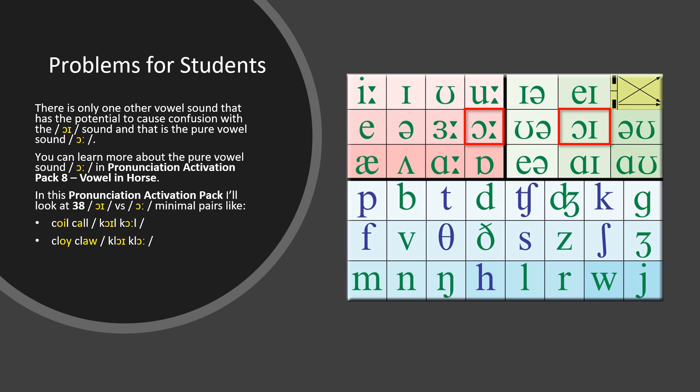Examples of OI vs. OR minimal pairs include: COIL vs. CALL, and CLOY vs. CLAW.